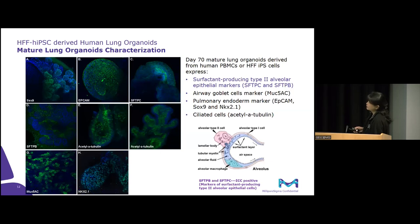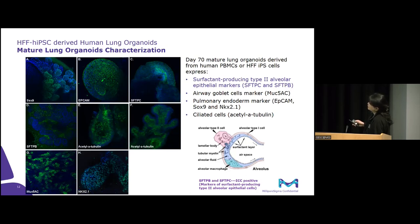We've gone on to further characterize these lung organoids and asked whether they express the correct cell types expected at the saccular stage. At this stage you should see type 2 alveolar cells which secrete surfactant. We were very happy to see that our day 70 organoids do express markers for type 2 alveolar epithelial cells — specifically SFTPC and SFTPB. They also express the airway goblet cell marker mucin 5AC, the pulmonary endoderm markers EpCAM, SOX9, and NKX2.1, and similarly also markers for ciliated cells.